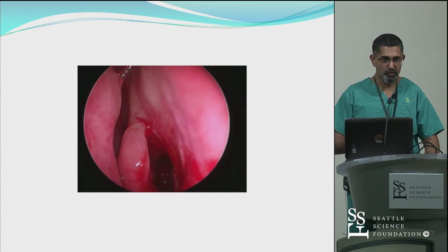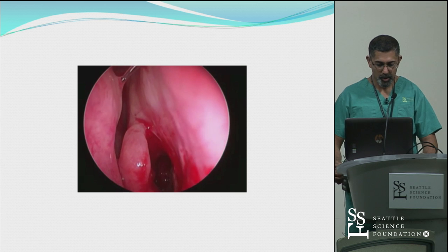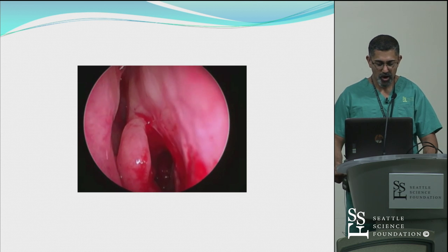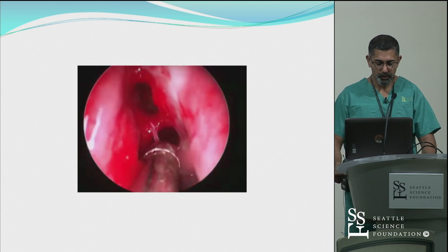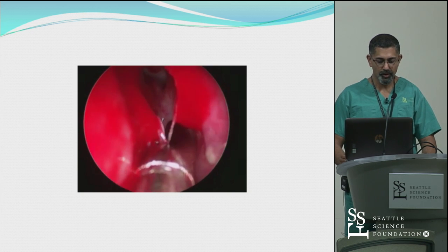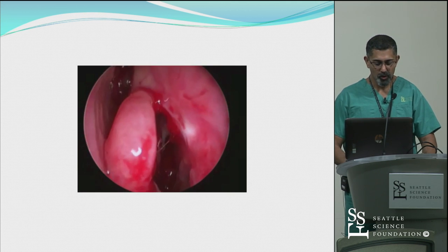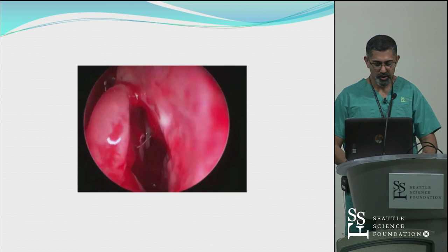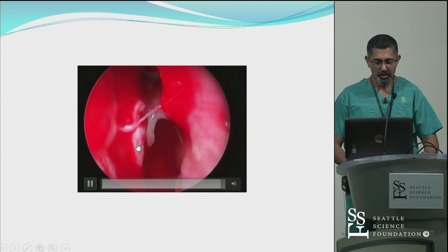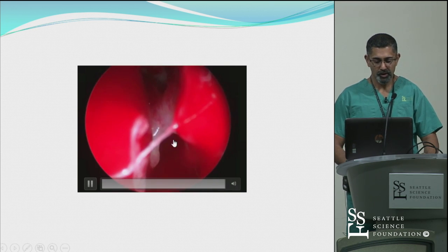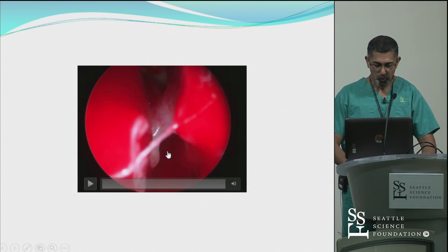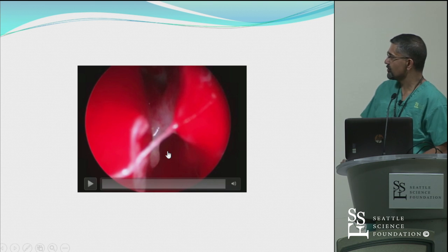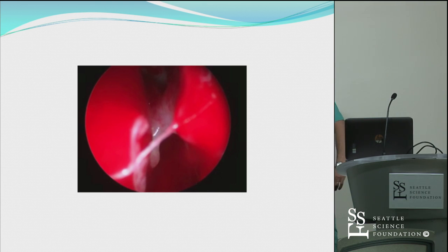A lot of these patients, because they've had FESS before, are pretty accepting of office procedures. After sucking the blood away, you look into that outflow tract and see the difference that's been achieved. One soft point here is that you can see why this frontal was prone to failure, because posterior and lateral to the frontal itself is this supraorbital ethmoid air cell.